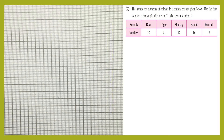Let's move to the next question. Question number two: the names and numbers of animals in a certain zoo are given below. Use the data to make a bar graph. The scale is given as: on Y-axis, one centimeter equals four animals. Names of animals and number of animals present in the zoo are given in the form of a table.